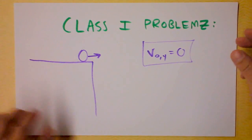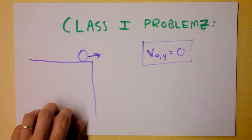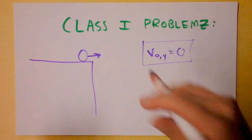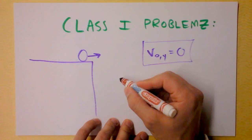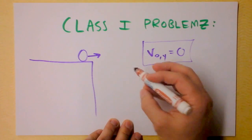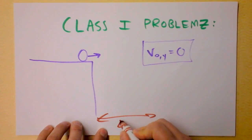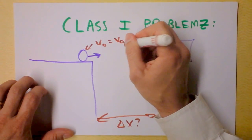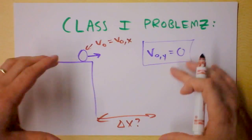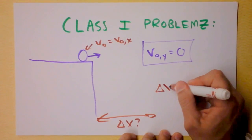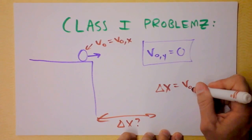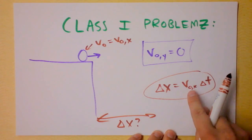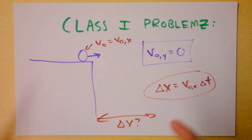I want to show you three examples of Class 1 problems. The things you might be asked to find are, for instance, how far the object goes — you might be asked to find delta x — or you could be asked to find the initial velocity in the x direction. These two things are related to each other by time, and that equation is: how far something has gone equals its velocity in the x direction multiplied by how long it has been going. We'll either be solving for delta x or for v-initial-x, and both are straightforward.